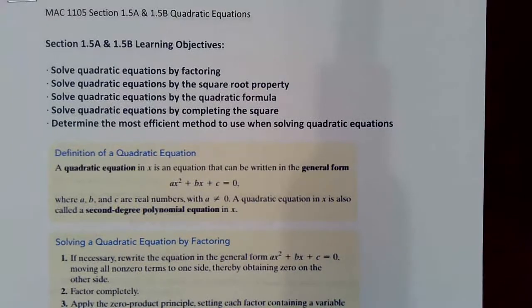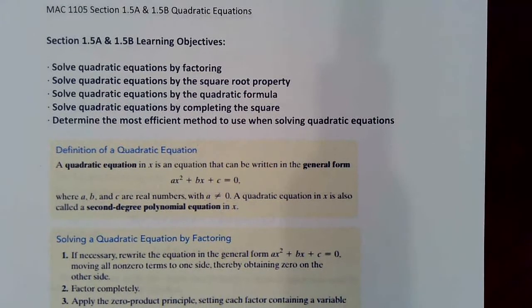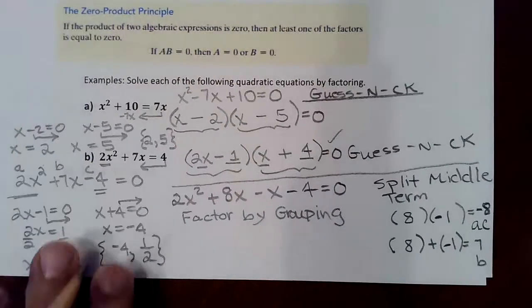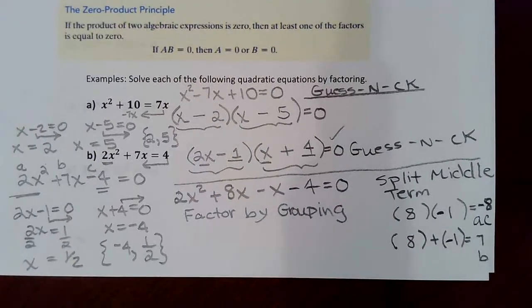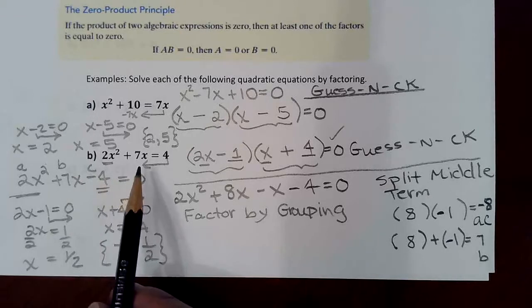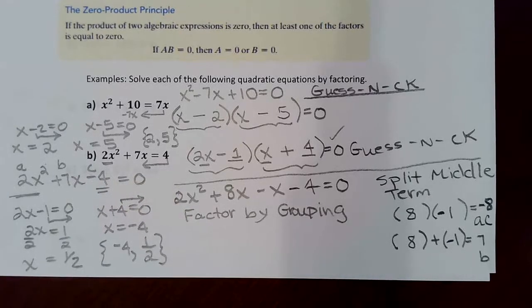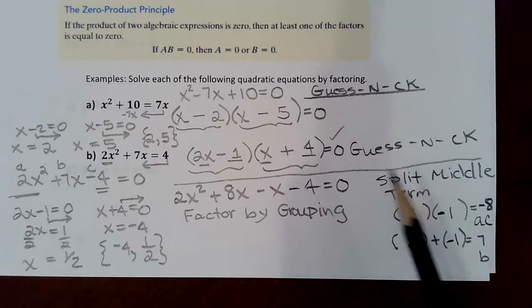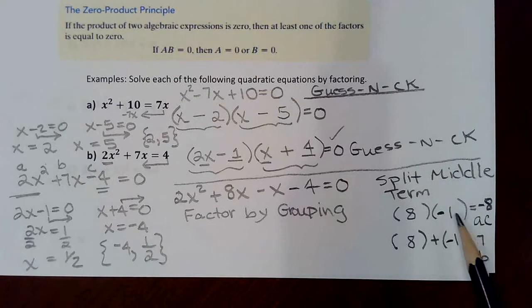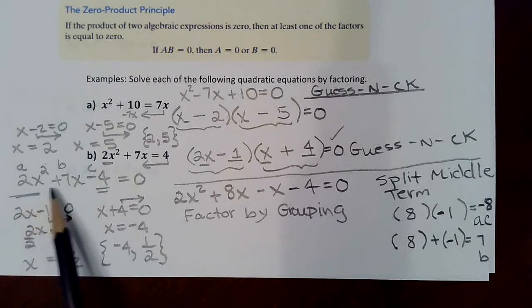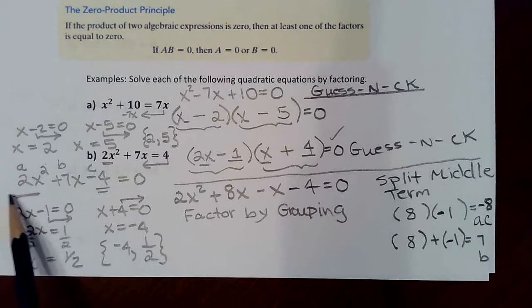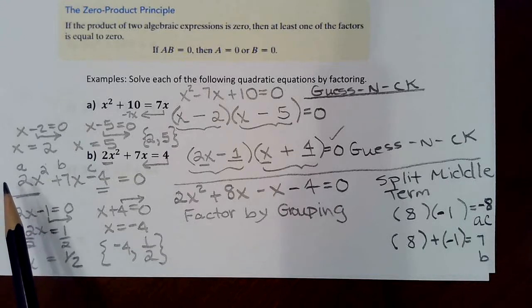Okay, this is MAC 1105. We are still in section 1.5, and where the last video left off, we were trying to factor this second problem, 2x squared plus 7x equals 4. I had already factored it by the guess and check method, and now I was going on to demonstrate another method for dealing with a quadratic trinomial where the leading coefficient is bigger than 1.